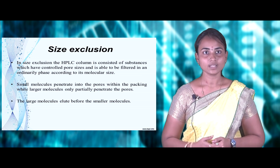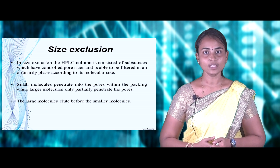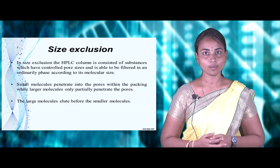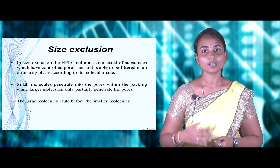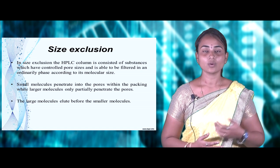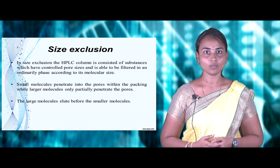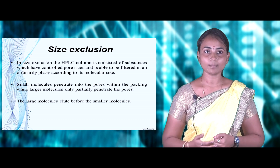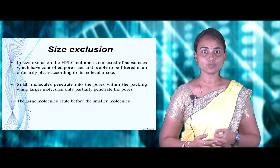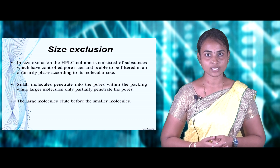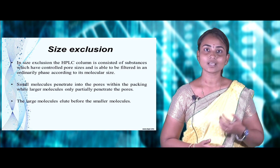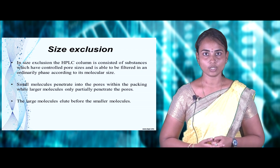Coming to the size exclusion column type: this type of column in HPLC consists of a substance with highly controlled pore size, able to filter different components based on their molecular size. Small molecules are retained and penetrate into the pores within the packing, while large molecules only partially enter the column surface. As a result, large molecules get eluted first before the smaller molecules.